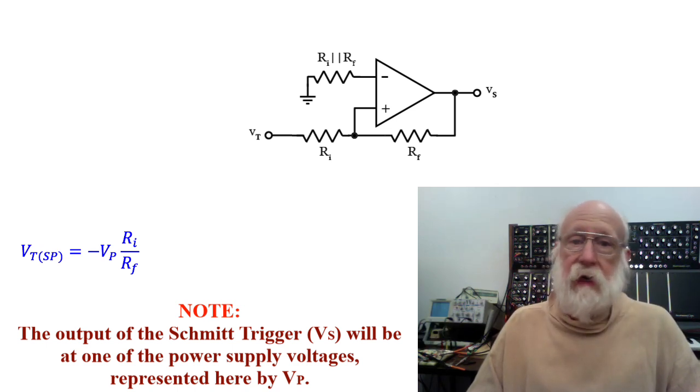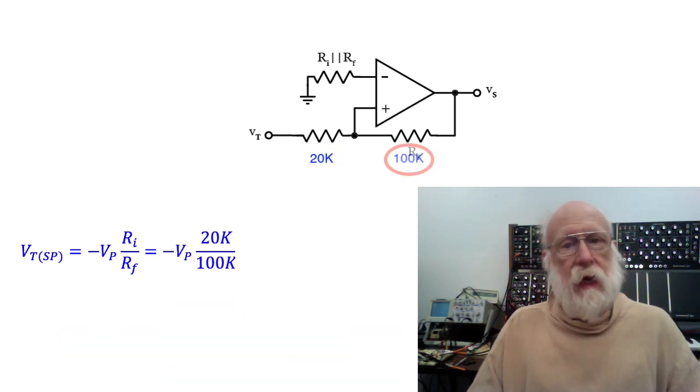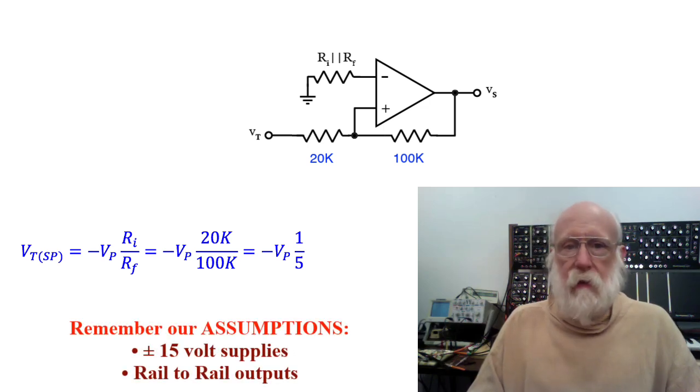R sub I, we're going to let be 20k, and we're going to let R sub F be 100k, and that makes that ratio, R sub I over R sub F, one-fifth.